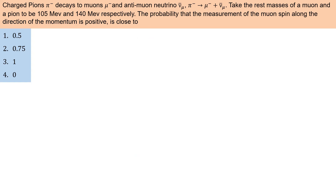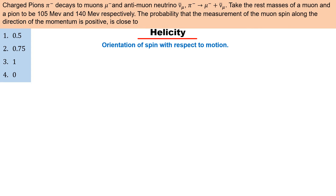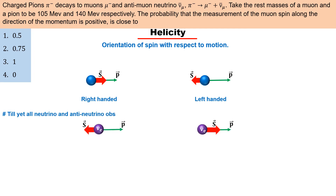लेकिन sub-atomic level पर parity का एक काफी interesting behavior देखने को मिलता है, जिसे helicity कहते हैं। Helicity किसी particle के momentum के respect में उसके spin के orientation को बताती है। अगर particle का spin उसके momentum की direction में है तो इसे right-handed helicity, और अगर particle का spin उसके momentum के opposite direction में है तो इसे left-handed helicity कहते हैं। Nature में सभी sub-atomic particles left और right दोनों-handed helicity वाले पाये जाते हैं — neutrino को छोड़ कर। आज तक सभी neutrino left-handed helicity वाले और सभी anti-neutrino right-handed helicity वाले ही मिले हैं। कभी भी right-handed helicity वाले neutrino या left-handed helicity वाले anti-neutrino नहीं मिले हैं।